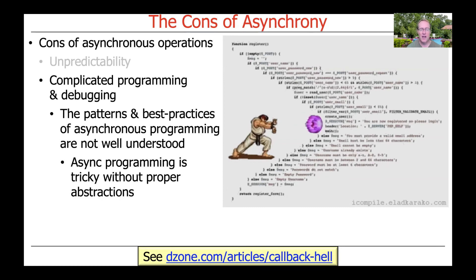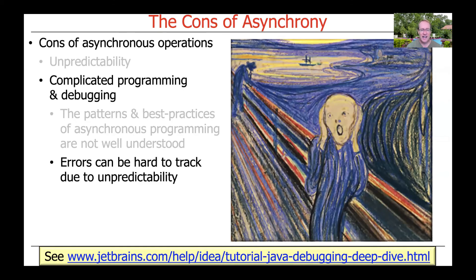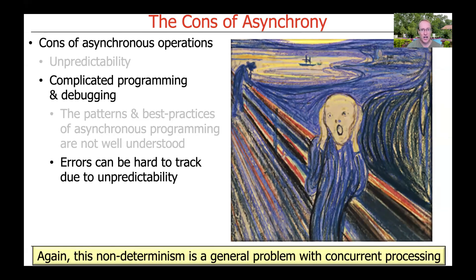Asynchronous programming without proper support from the language, runtime platform, or class libraries can be very tricky. If you've ever programmed in JavaScript, you may be familiar with something called callback hell — a twisted maze of spaghetti code structure you get with asynchronous processing in JavaScript, because it lacks the cool features we'll discuss with completable futures. Another problem is that it can be hard to track down errors due to the unpredictable and out-of-order nature of the processing, though these are really general issues with concurrent and parallel programming.